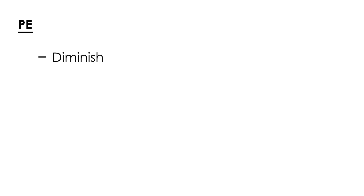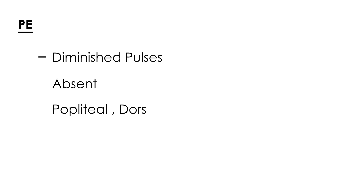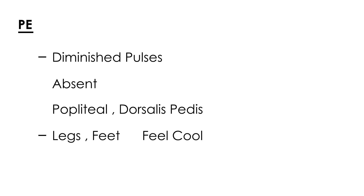On physical exam, you can palpate for diminished pulses. The pulses may be diminished or, in severe cases, even absent. You can palpate the popliteal area or the dorsalis pedis pulse to check for diminished pulses, which is a sign of impaired blood circulation. The legs or feet may also feel cool due to poor blood circulation, and in severe cases ulcers can develop.